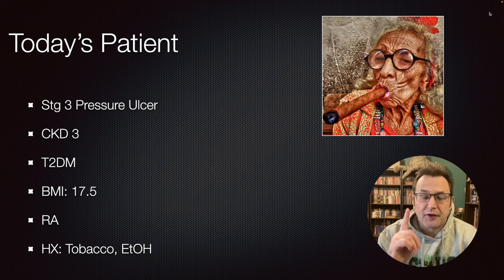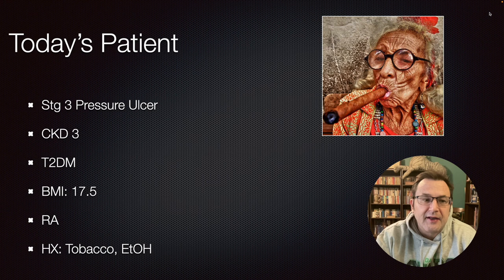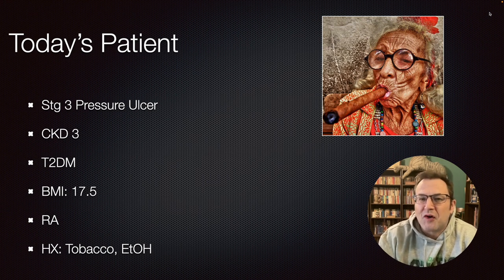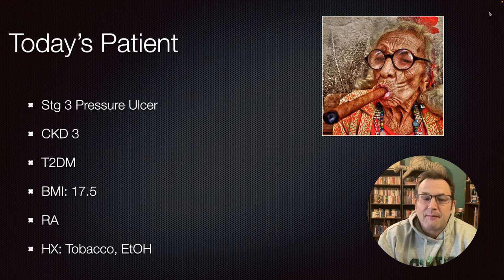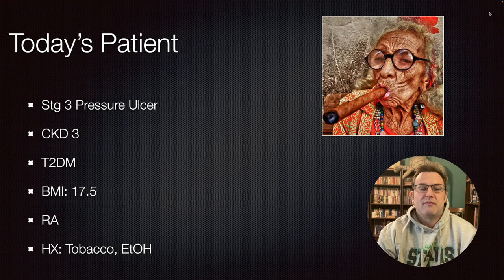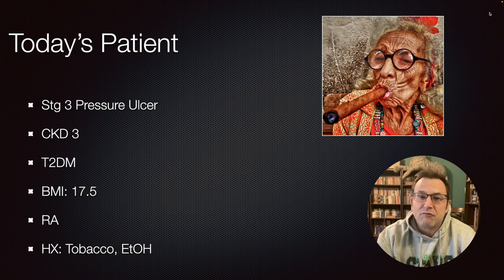Here's Gertie. Gertie's going to be with us today. She's a composite of all of the different patients I have worked with. She's presenting today with a stage 3 pressure ulcer, stage 3 chronic kidney disease, a BMI of 17.5, type 2 diabetes, rheumatoid arthritis, and she's also a heavy alcohol and tobacco user.